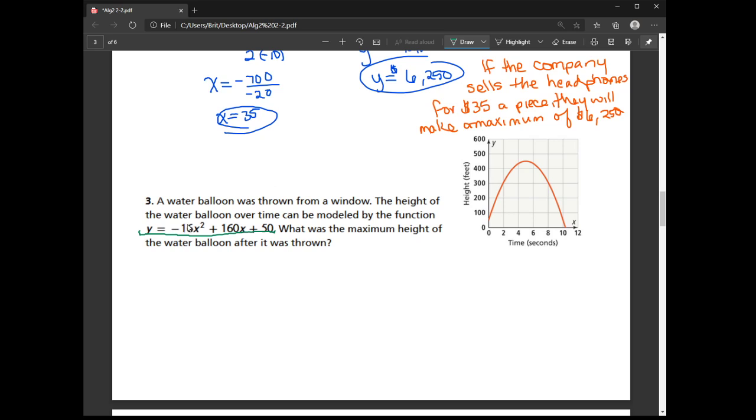If you're taking physics, here's some kind of interesting stuff here. This negative 16 is the pull of gravity. So how hard gravity is pulling it towards the ground in feet per second squared. This 160 is the initial vertical velocity. So how fast this thing is going up in feet per second. So they are launching this thing at 160 feet per second initially. And then this 50 is the initial height that they're launching it from.